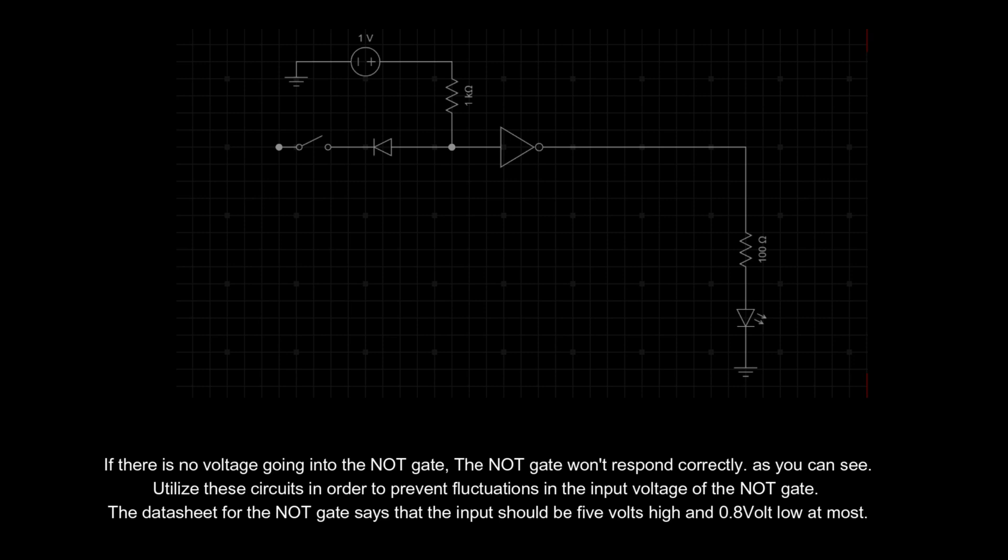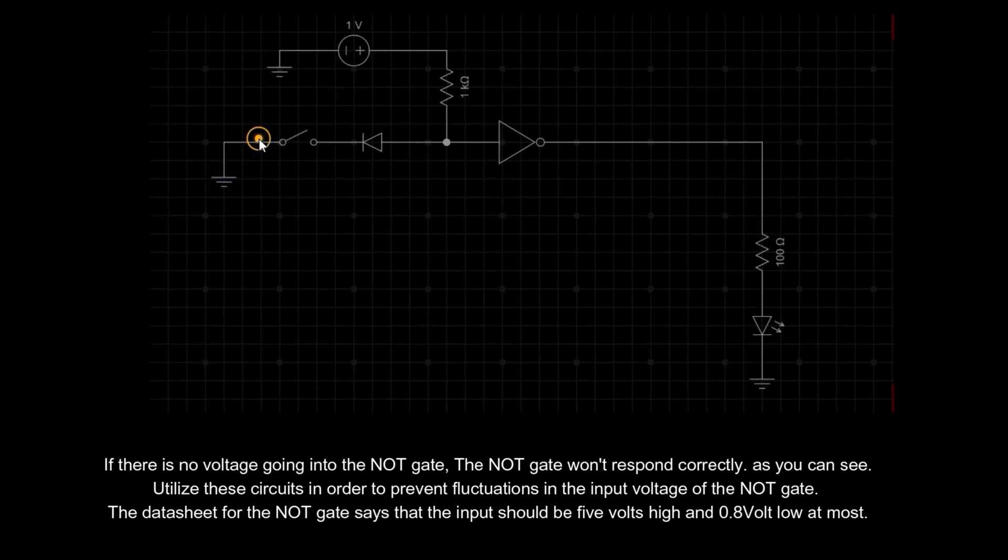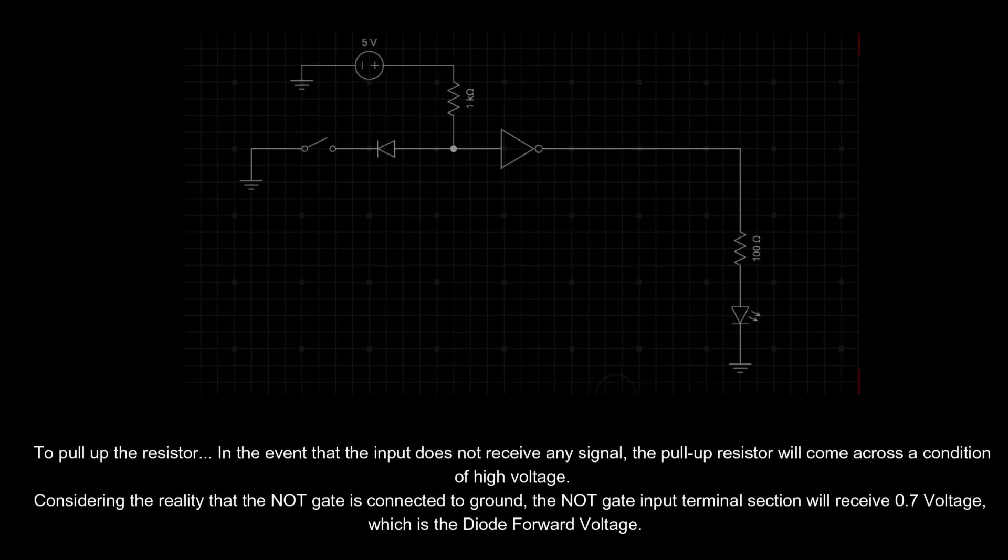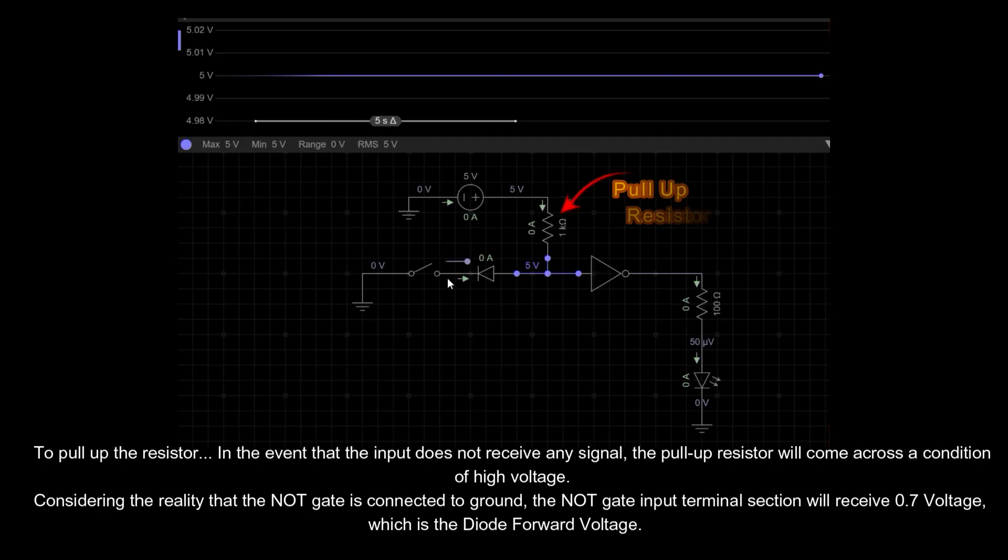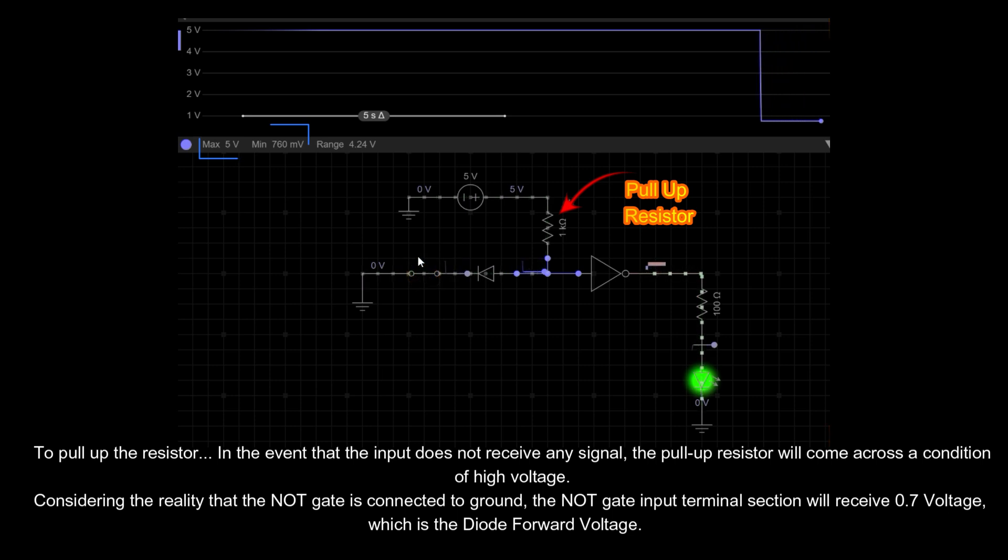This is the section that I have used in order to obtain a high state of NOT gate input to pull up the resistor. In the event that the input does not receive any signal, the pull-up resistor will come across a condition of high voltage. Considering the reality that the NOT gate is connected to ground, the NOT gate input terminal section will receive 0.7 voltage, which is the diode forward voltage.